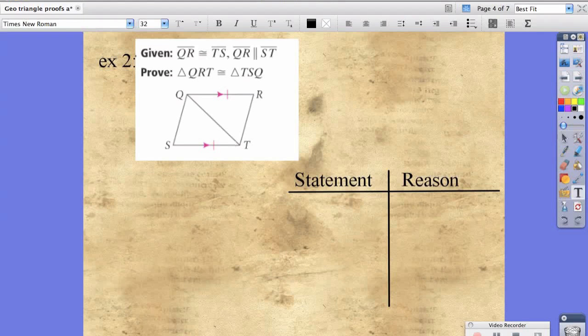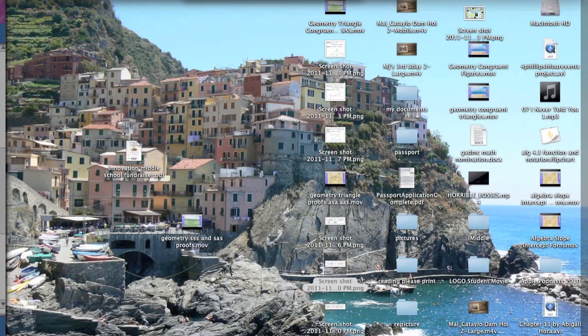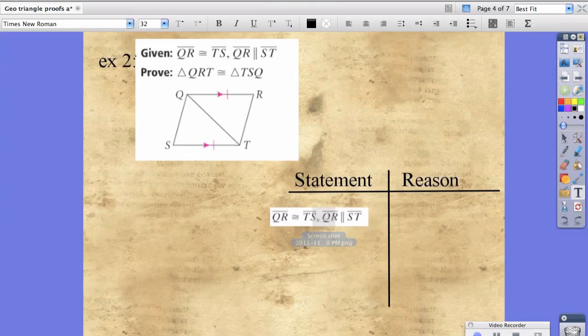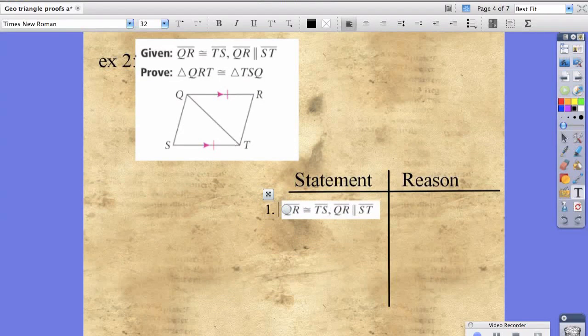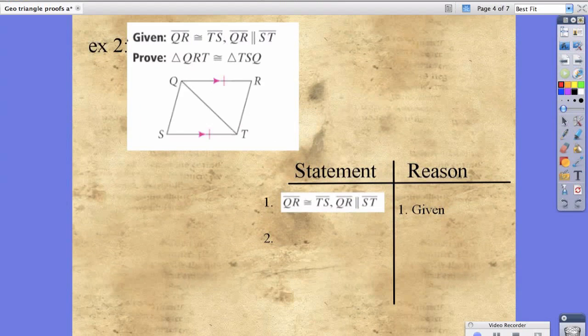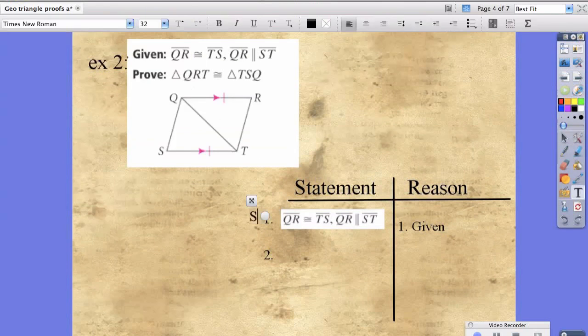Let's try another example. Line segment QR is congruent to line segment TS, and QR and ST are parallel. That's going to be our first step, and that's because it's given. Let's make sure we're keeping track. We proved a side.